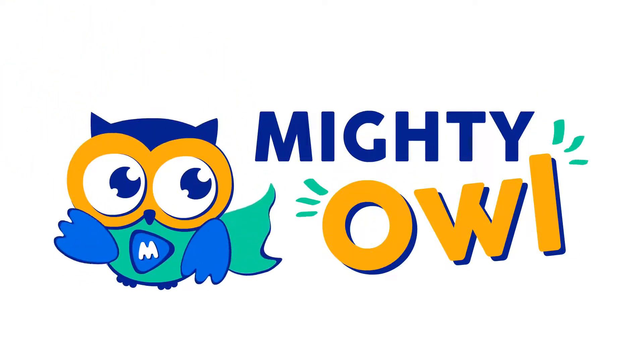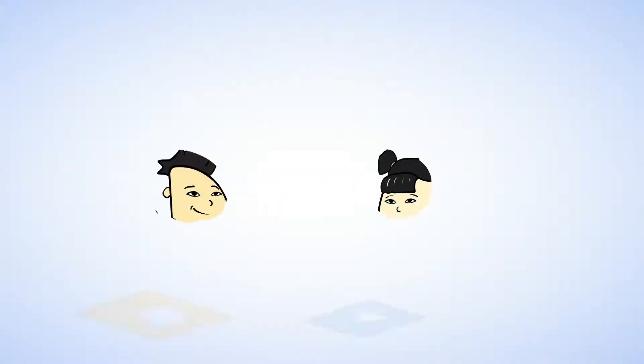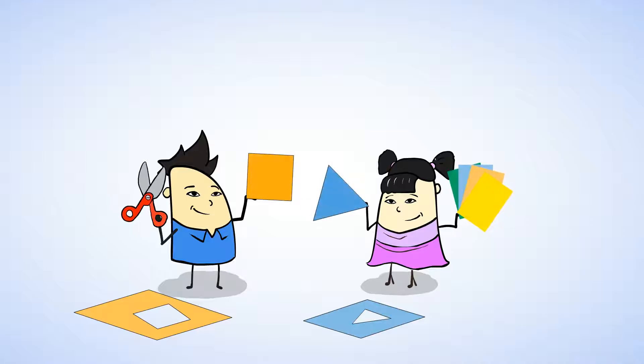Hello, this is Mighty Owl. Cool! Chen and Su are cutting shapes out of paper to make pictures. Su just made a blue triangle, and it looks like Chen cut out an orange square.